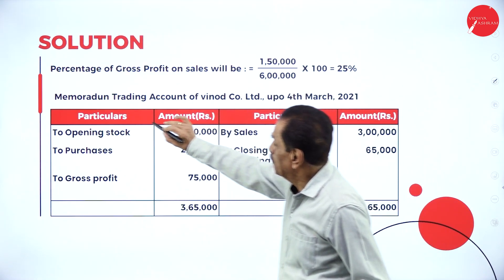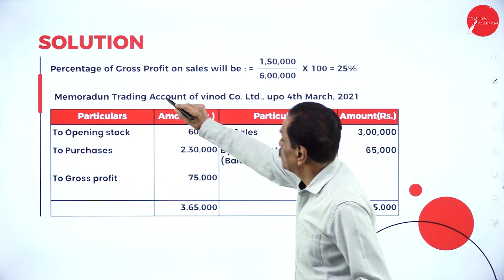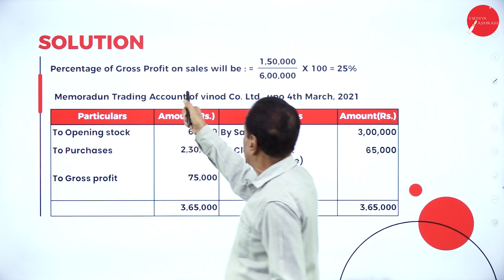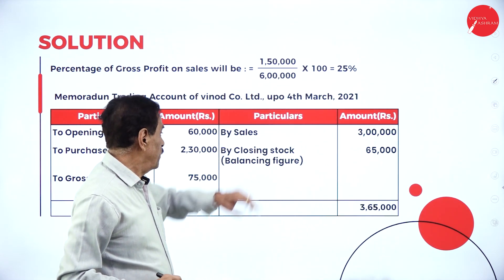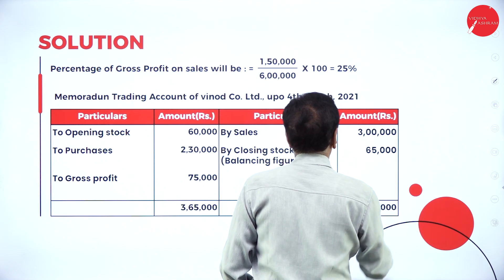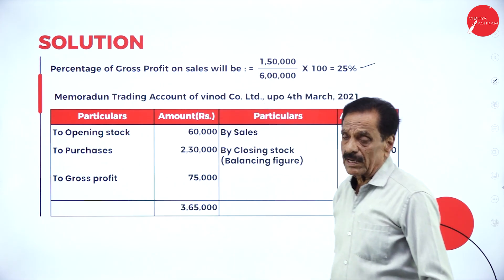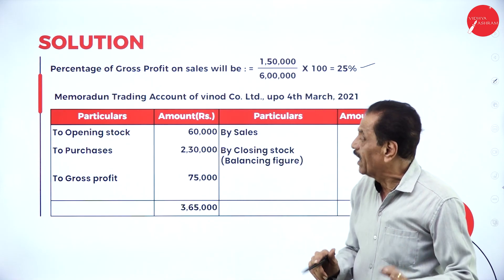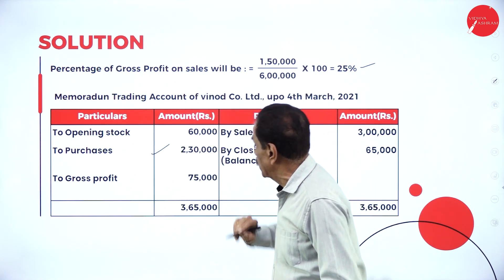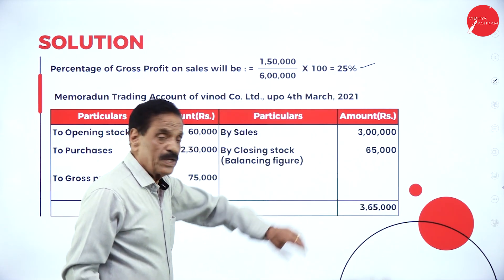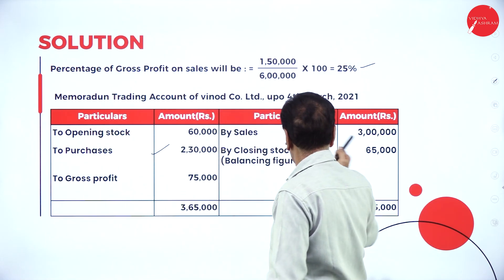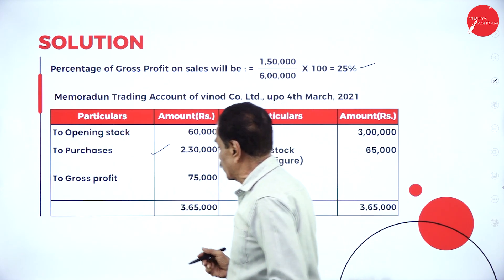Now in the memorandum trading account, the percentage of gross profit on sales is: gross profit divided by sales × 100 = 1,50,000 / 6,00,000 × 100 = 25%. We now prepare the memorandum trading account up to the date of fire (4th March). The closing stock of the previous year becomes the opening stock. Purchases up to the date of fire: Rs. 2,30,000. Sales up to date of fire: Rs. 3,00,000. Gross profit is 25% of Rs. 3,00,000 = Rs. 75,000.